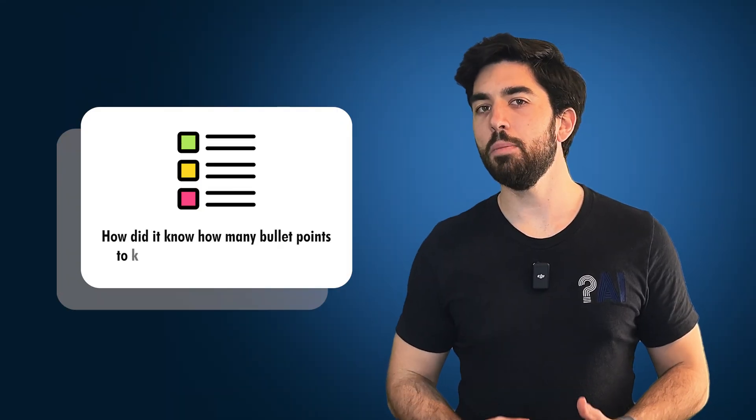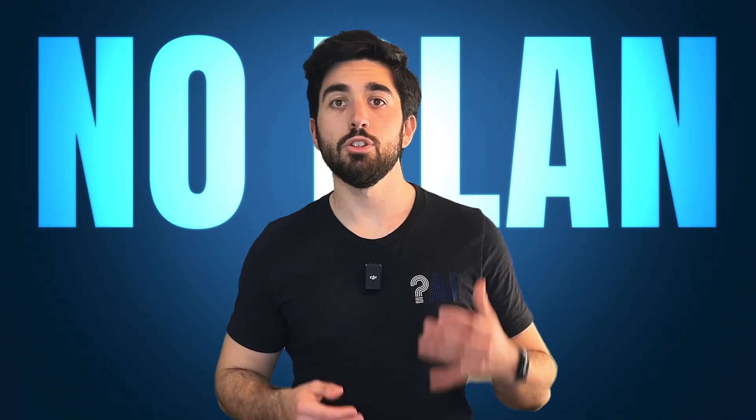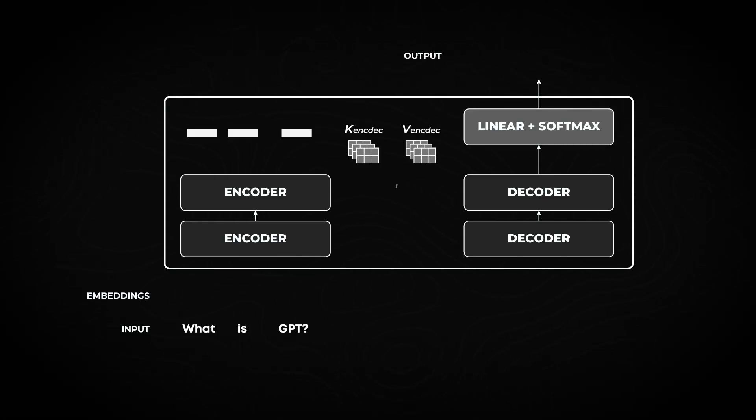But then, how did it know how many bullet points to generate and finish generating? Remember, there's no plan. It's just creating one word at a time based on all previous ones. It doesn't know what's to come and when it has probably answered, so it should stop typing. That's what we are going to answer now.